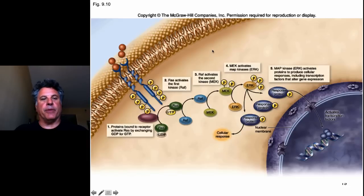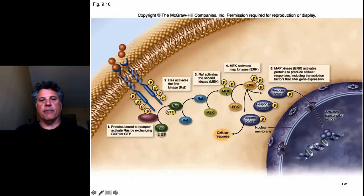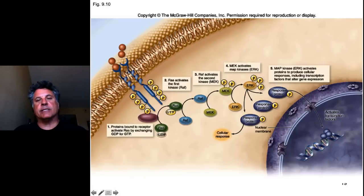In another example of a receptor tyrosine kinase pathway: ligand binding activates RAS, which activates RAF. RAF activates MEK, which is essentially a MAP kinase, and MEK activates ERK — a protein phosphorylation cascade. Response proteins are eventually phosphorylated and move into the nucleus through nuclear pores, activating transcription of target genes. So the transcriptional profile of a cell can be changed by binding of an extracellular ligand and transduction of that signal through a protein phosphorylation cascade.